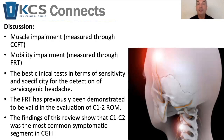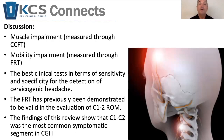Muscle impairment, as measured by the cranial cervical flexion test, and mobility impairment, as measured by the flexion rotation test, have the best sensitivity and specificity for separating out cervicogenic headache and migraine. The flexion rotation test has previously been shown to target primarily the C1-2 level, and that is supported by this paper as well.